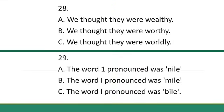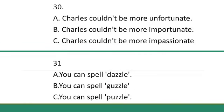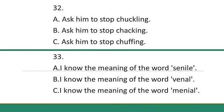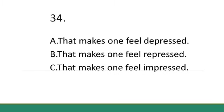Number 28: We thought they were worthy. Number 29: The word I pronounced was bile. Number 30: Just couldn't be more unfortunate. Number 31: You can spell Gazzle. Number 32: Ask him to stop chuckling. Number 33: And know the meaning of the word Phenal. Number 34: That makes one feel depressed.